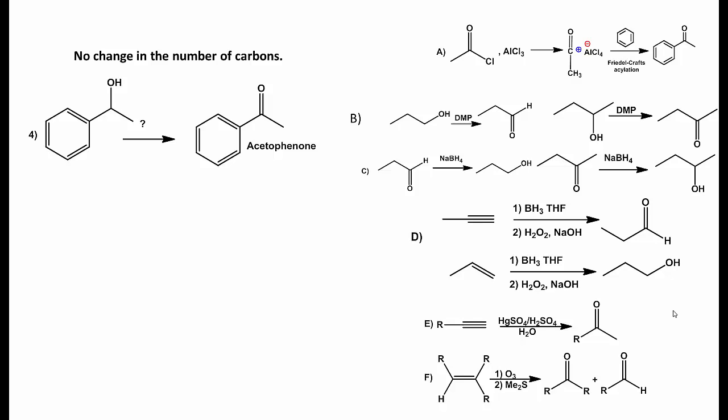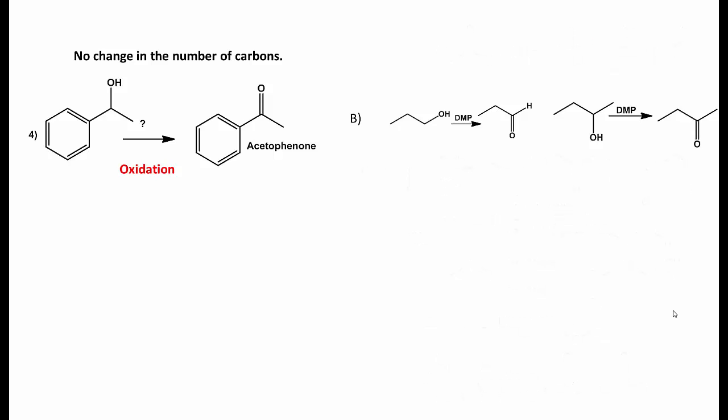Finally, the last reaction contains a secondary alcohol. To form a ketone, the carbon that is bonded to the oxygen must be oxidized. Thus, we need an oxidizing reagent. The only oxidizing reagent available is DMP. Therefore, the correct reagent is B, DMP.